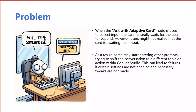The 'Ask with Adaptive Card' action is actually waiting for user input when you use this node in your topics. But sometimes, because of certain settings in Copilot Studio not being configured, there is a chance users may have a bad experience — they might not know the adaptive card is waiting for their input and may want to navigate to other topics expecting different results, not the adaptive card response.